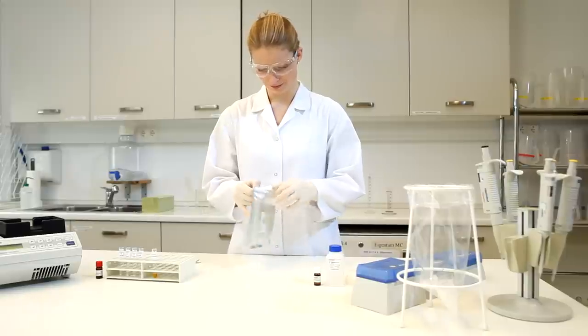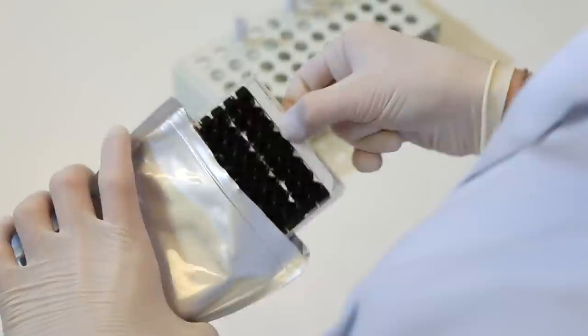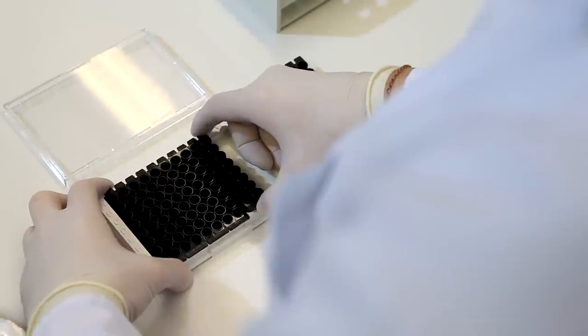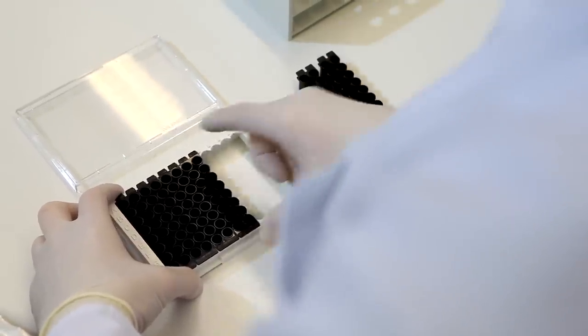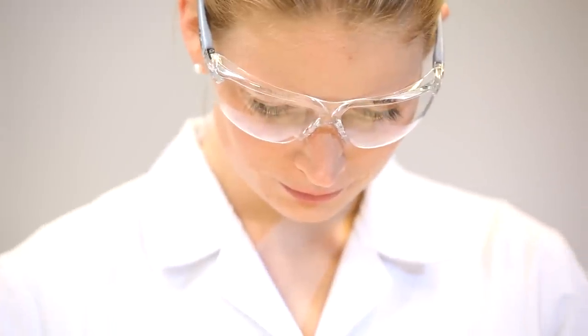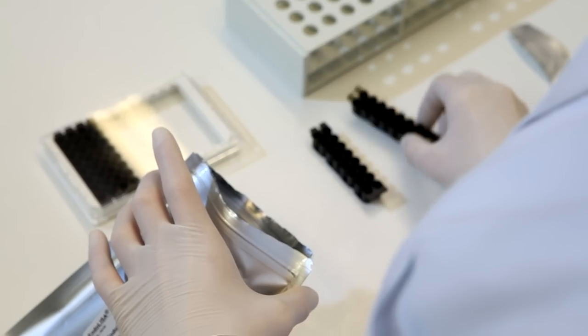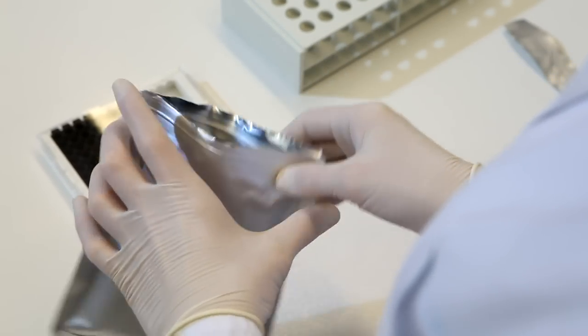Remove unused strips from the microplate and put these in the resealable aluminum bag provided. Store at 2 to 8 degrees Celsius.